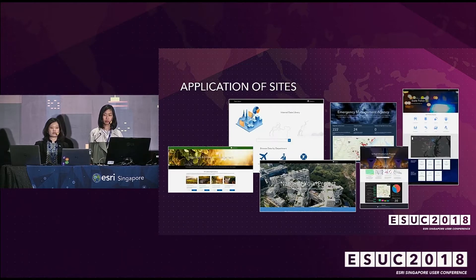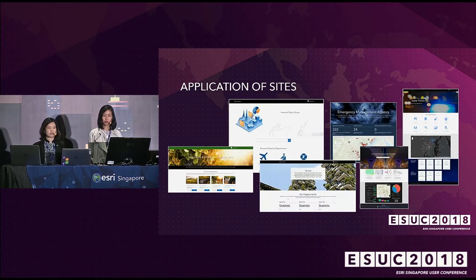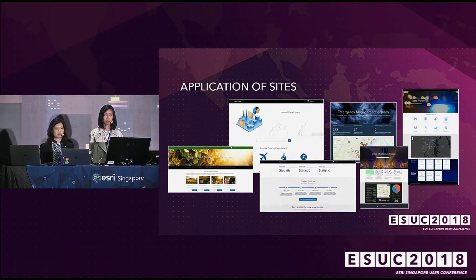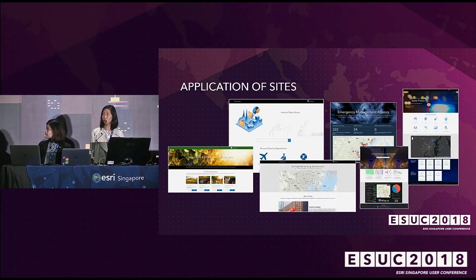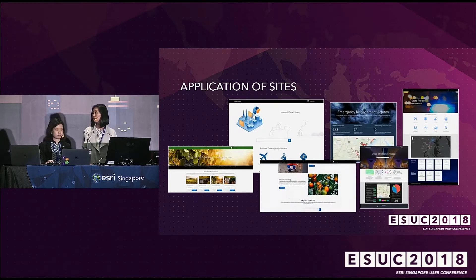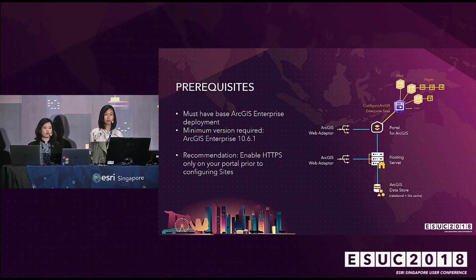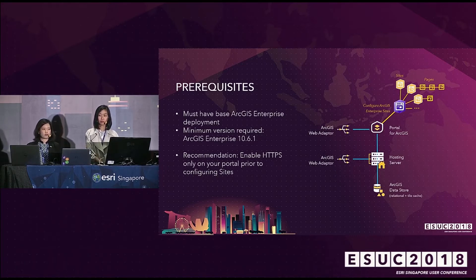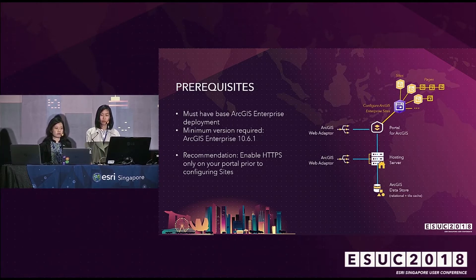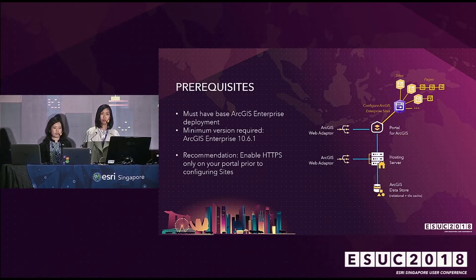These are some examples of sites incorporating the underlying data and maps from the groups in your portal. Sounds interesting? What do you need before you can start creating your first site?